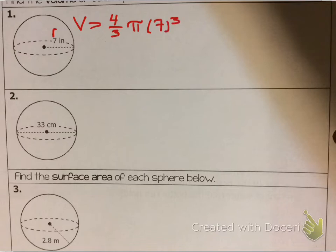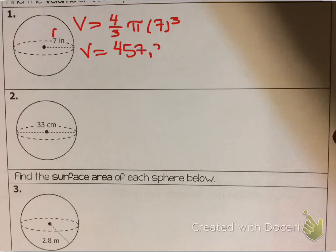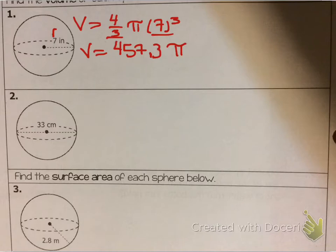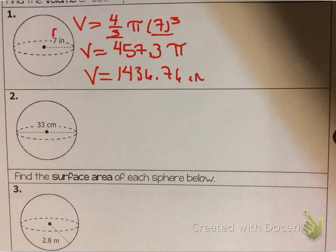Now obviously depending on what type of calculator you have, your answer may come out differently. When I take this into my calculator I get 457.333... π — that's what it would be called in terms of π. Most of the time I want you to actually multiply by π, so times π to get an answer of 1436.76 cubic inches. That would be the volume.